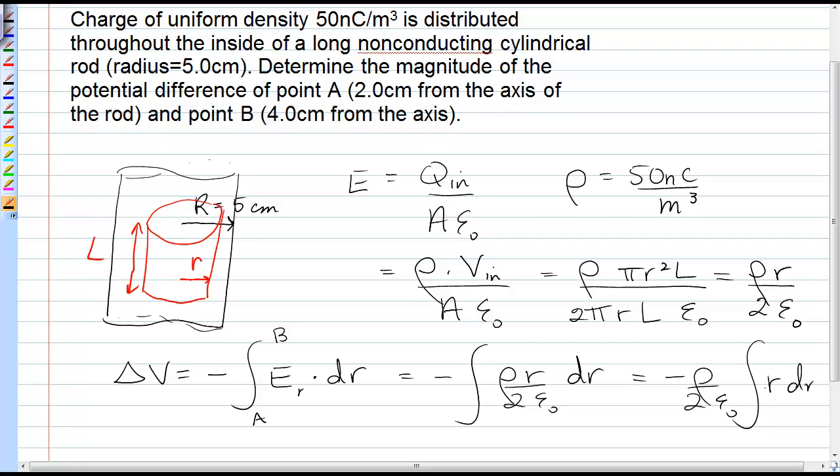From point A to point B, point A is 0.02 meters, point B is 0.04 meters.